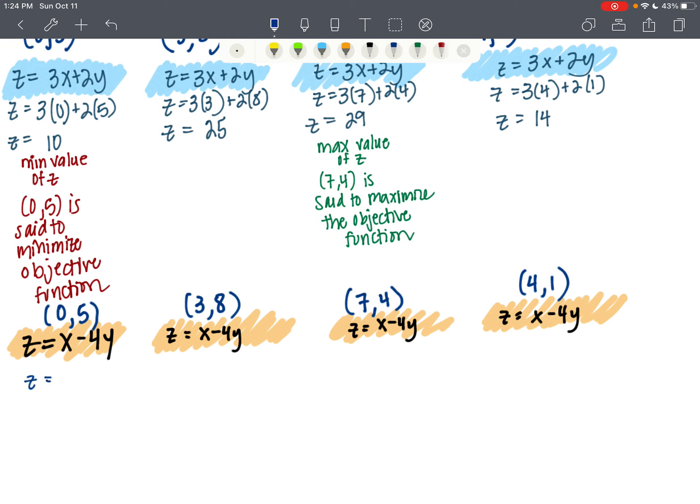So I have negative 20. I have 3 minus 32 is negative 29. I have 7 minus 16. That's going to be a negative 9. And I have 4 minus 4, which is 0.